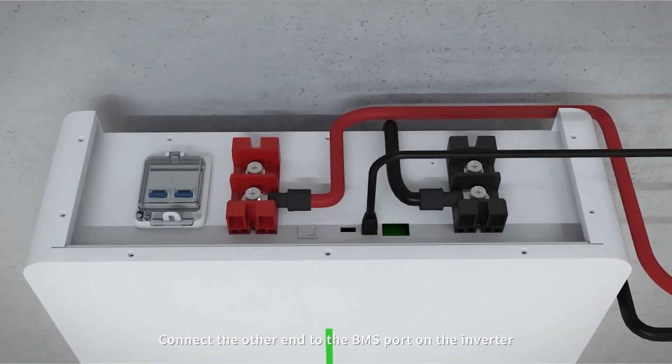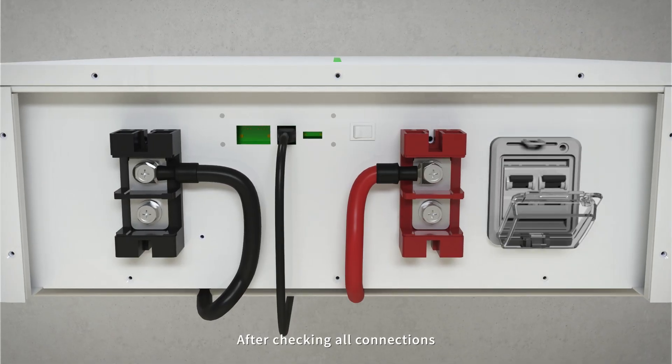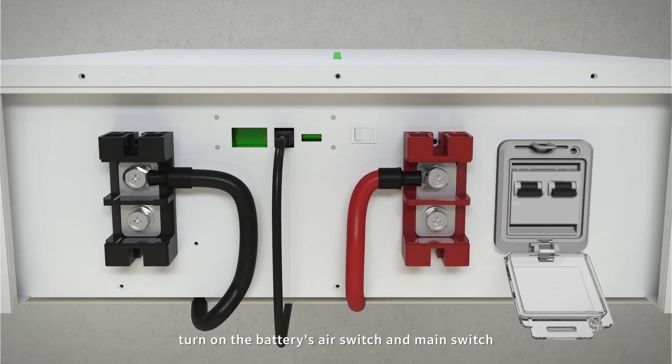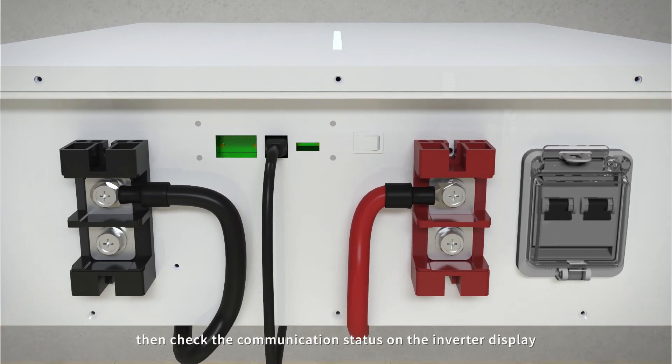Connect the other end to the BMS port on the inverter. After checking all connections, turn on the battery's air switch and main switch, then check the communication status on the inverter display.